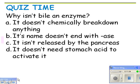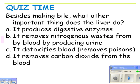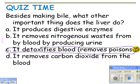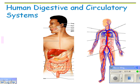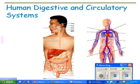Why isn't bile an enzyme? Because it physically breaks things down, not chemically. Besides bile, the liver also detoxifies blood — it removes poisons. This is important: if you've known someone who is an alcoholic, they can die of liver damage or cirrhosis because the body is constantly detoxifying alcohol from the blood. And that's it for the digestive system.